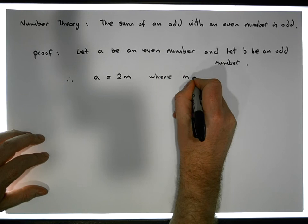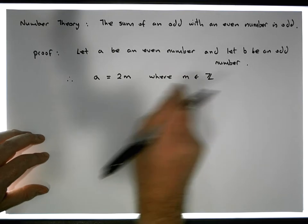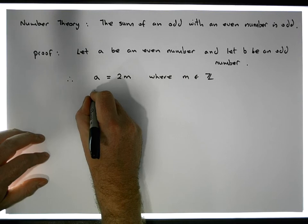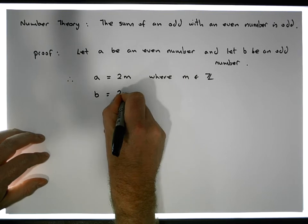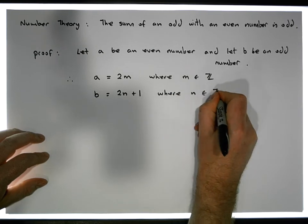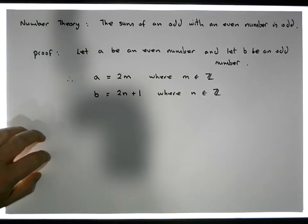And we get that from the division algorithm. And also B being an odd number, well B must be equal to two times some other number plus one, where N is an integer. And this comes once again from the division algorithm.